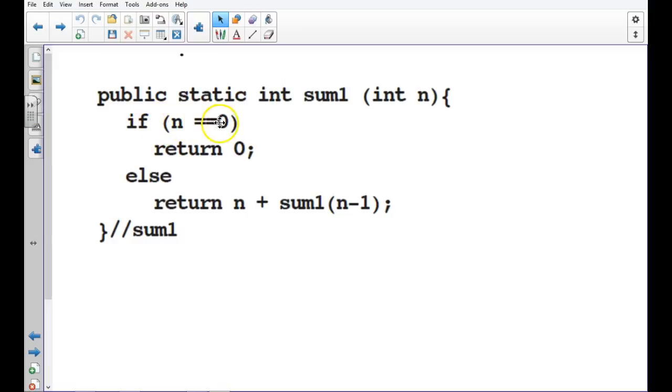So if n equals 0, we're going to return 0. That is the base case. When n equals 0, we're returning 0. That's our base case. That's what's going to stop things.